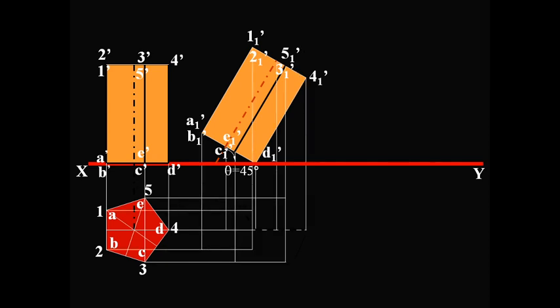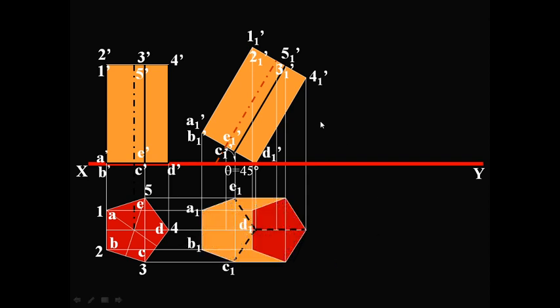Draw the vertical projections and horizontal projections. As can be seen, the top base 1, 2, 3, 4, 5 is clearly seen. The base A, B, C, D, E is not seen. Along with the top base, you see three rectangular faces which are E, A, 1, 5 and A, B, 2, 1 and B, 2, 3, C.